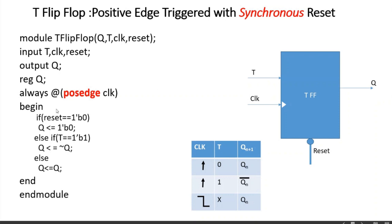If you need a negative edge triggered version, replace posedge with negedge. If you want asynchronous reset, add the reset signal to the sensitivity list. If the reset signal should be active high, change the condition to reset == 1'b1. With these variations you can design a T flip-flop of any given configuration.